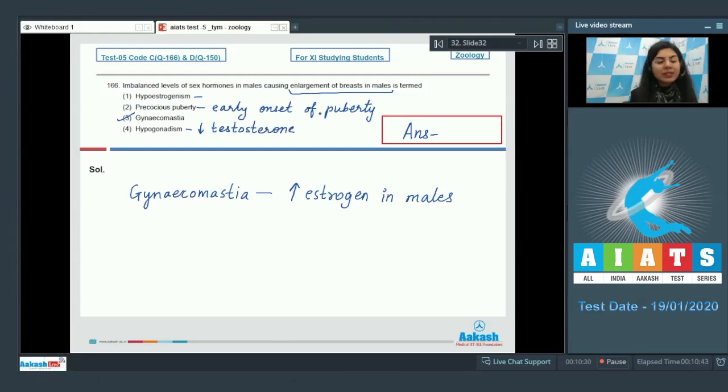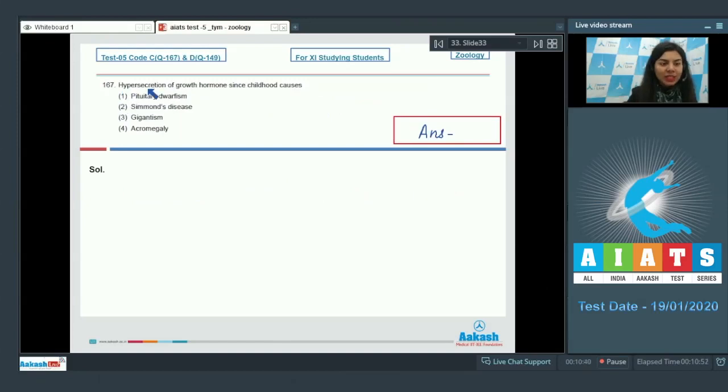Question 167: Hypersecretion of growth hormone since childhood causes pituitary dwarfism, Simmon's disease, gigantism, or acromegaly. When there is excess of growth hormone, depending upon at which age the excess is present, it has different effects. Here the growth hormone is excess in childhood or since childhood.